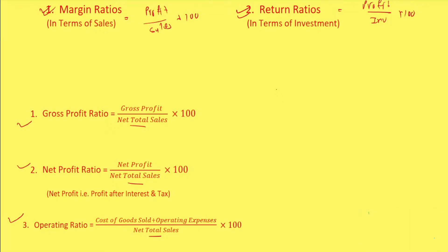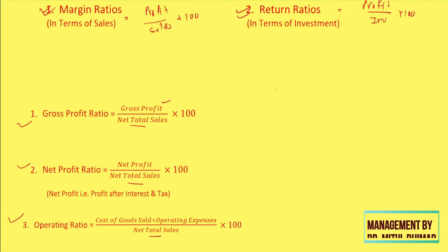For gross profit ratio, the numerator is gross profit — that is the difference between sales and cost of goods sold (COGS). For net profit ratio, the numerator is net profit — that is profit after interest and tax, which means the final answer of your profit and loss account.